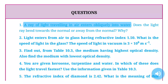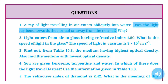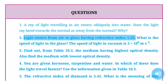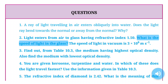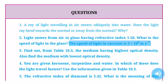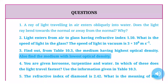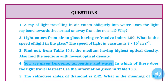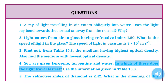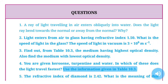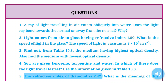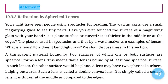Questions: (1) A ray of light traveling in air enters obliquely into water. Does the light ray bend towards the normal or away from the normal? Why? (2) Light enters from air to glass having refractive index 1.50. What is the speed of light in the glass? The speed of light in vacuum is 3 × 10⁸ m/s. (3) Find out from Table 10.3 the medium having highest optical density and the medium with lowest optical density. (4) In which of kerosene, turpentine and water does the light travel fastest? (5) The refractive index of diamond is 2.42. What is the meaning of this statement?